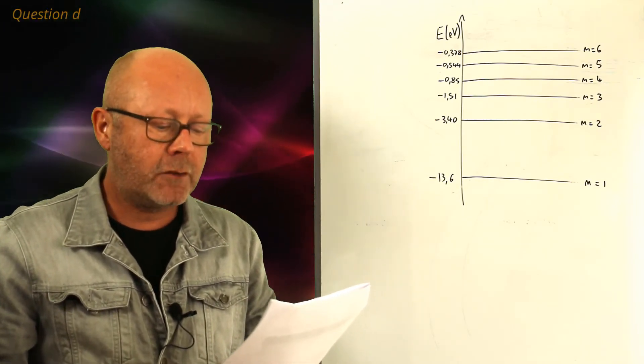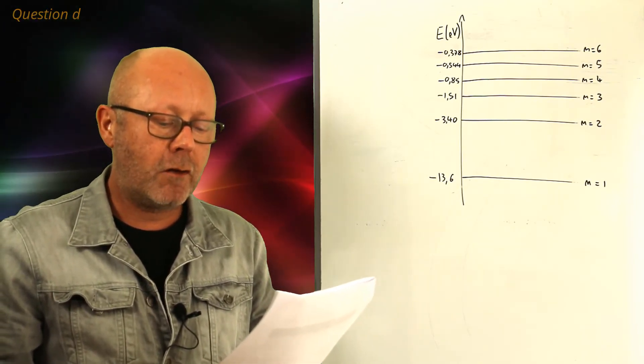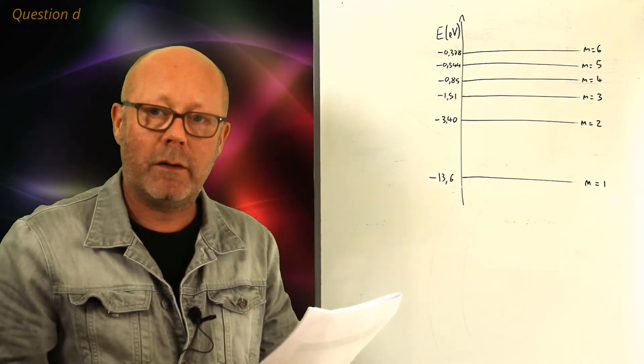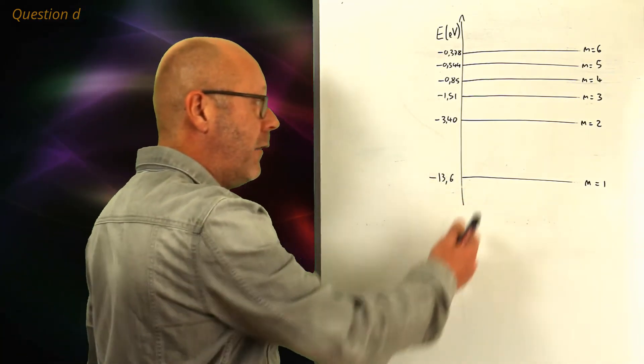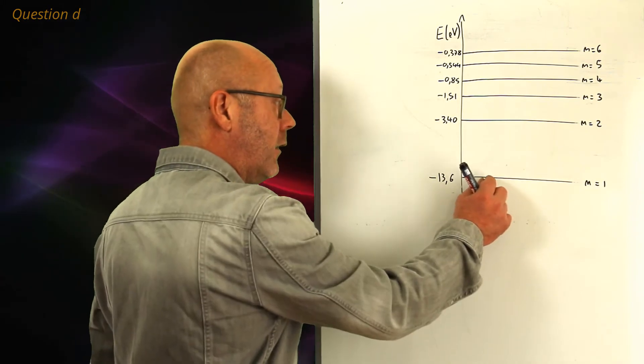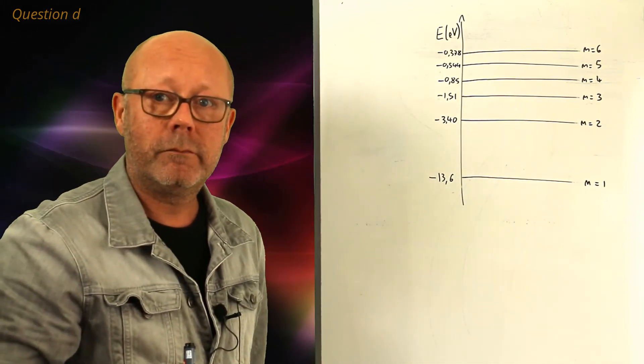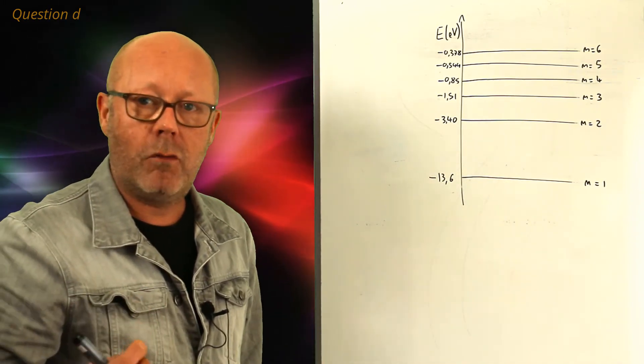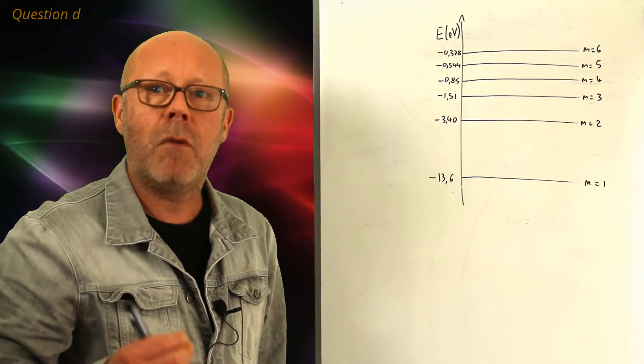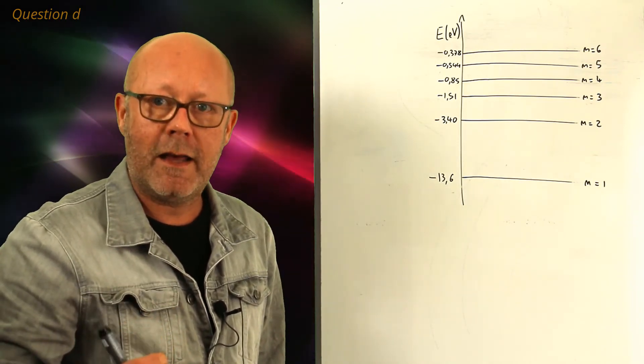Question D. What can one say about a hydrogen atom that has an energy corresponding to level N equals 1? Therefore, if the hydrogen atom is at its lowest level. If it's at its lowest level, it means it has its lowest energy. It is the most stable configuration it can have.